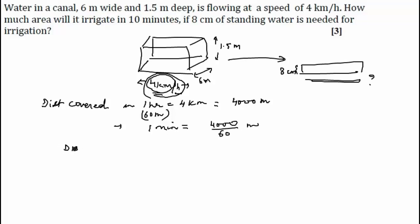And therefore distance covered in 10 minutes, because water is coming out in 10 minutes, that gives us 4,000 by 60 into 10. That gives us 2,000 by 3 meter after calculation. So that will be our length. We consider this to be our length.